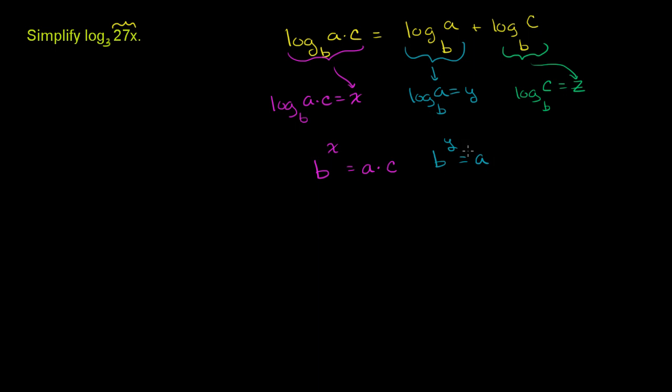I'm just writing the same truth as an exponential equation, instead of a logarithmic equation. So b to the z power is equal to c. This is the same statement said in a different way. And this is the same truth said in a different way.